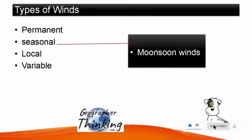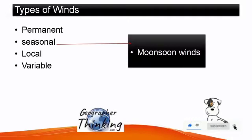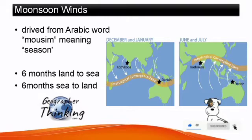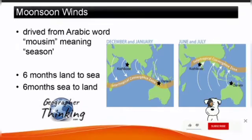I have already discussed permanent winds, and the link to that lecture is in the description of this video. Today I will discuss seasonal winds, which include monsoon winds. The term monsoon is derived from the Arabic word 'mausim,' meaning season.